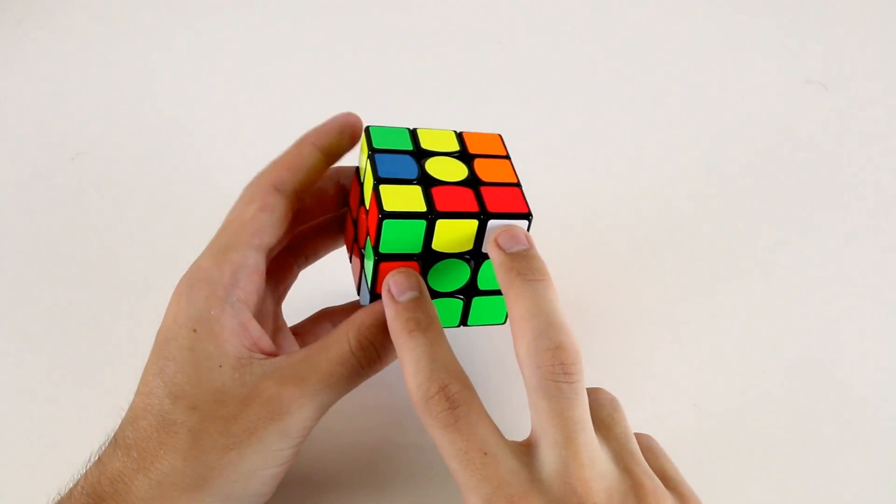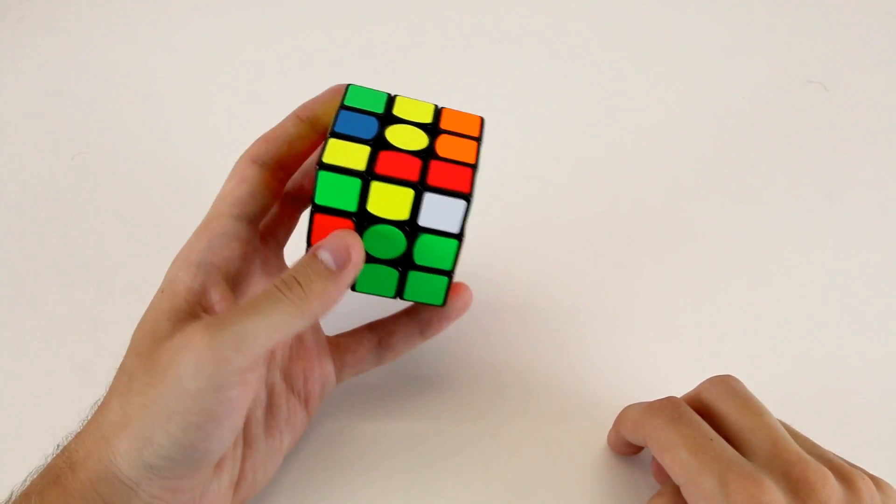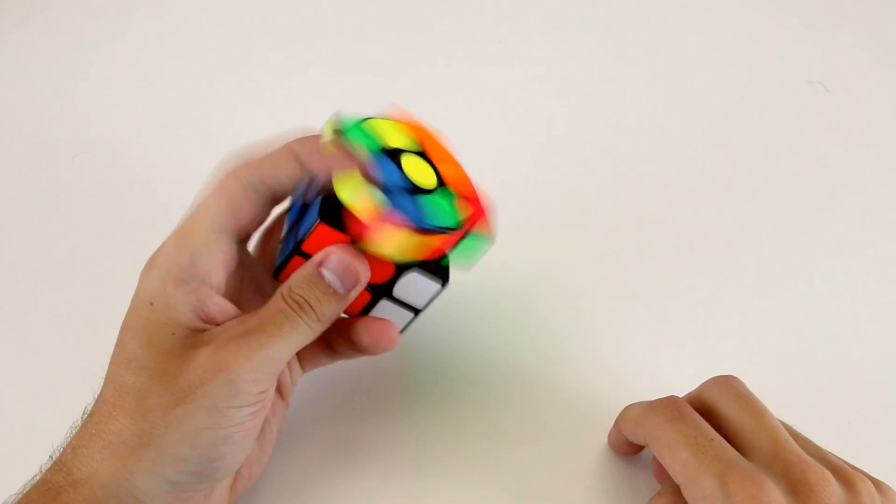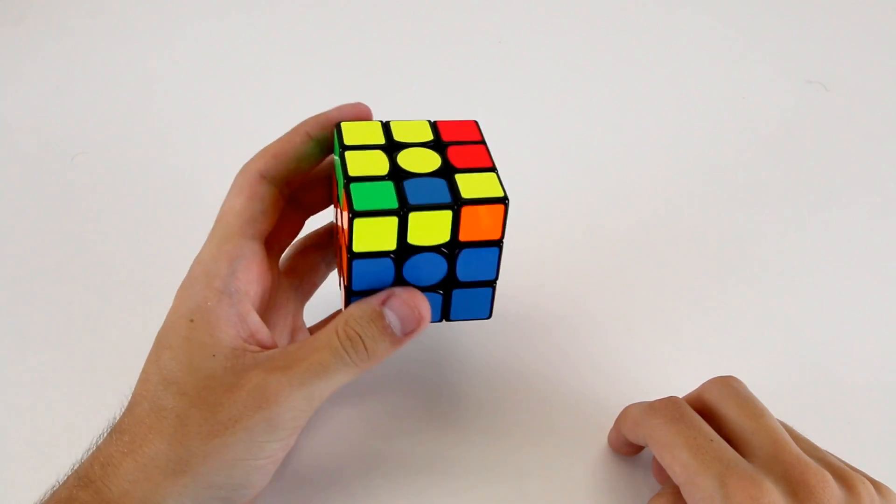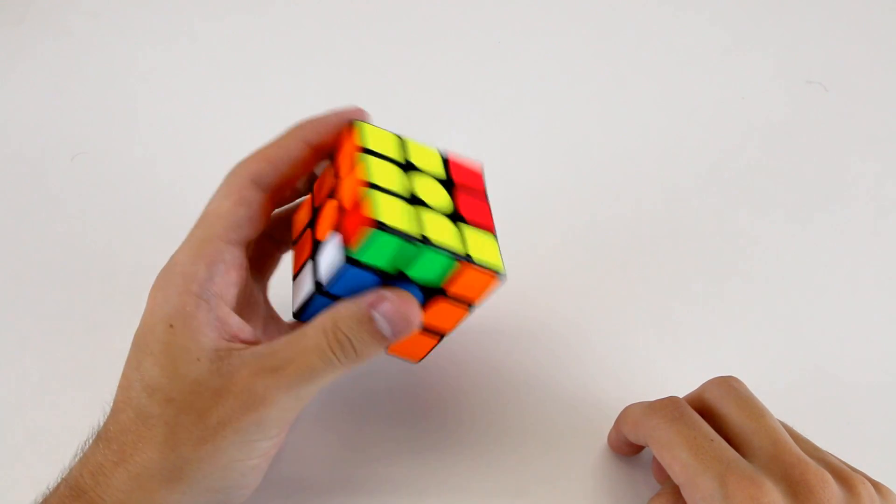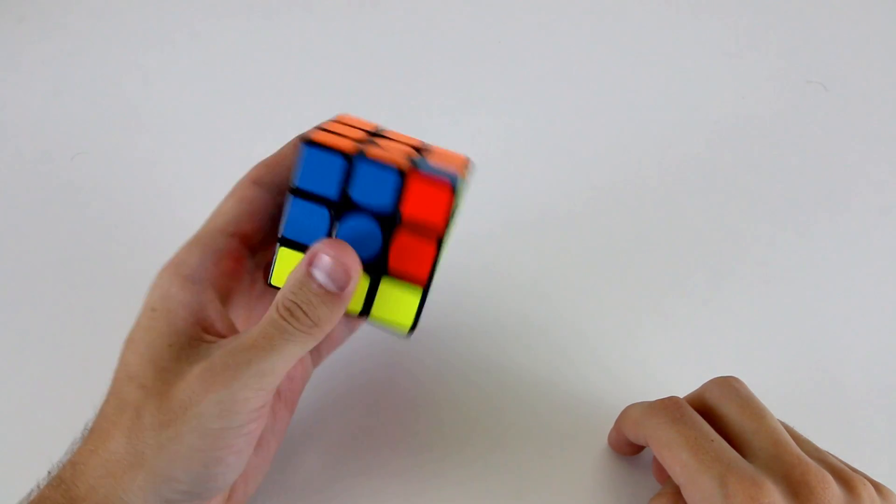And then next I have these two. So probably what I'll do is rotate like this, do r u r prime. And then insert them like so. Then do my OLL and then PLL.